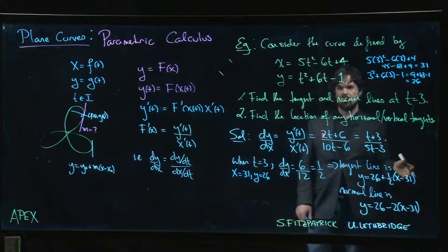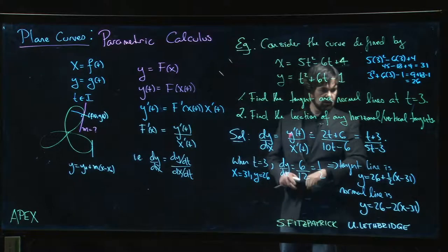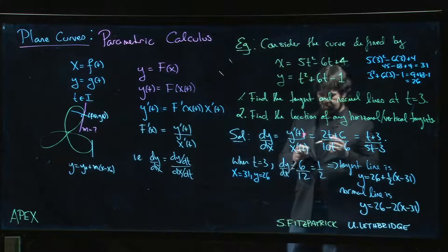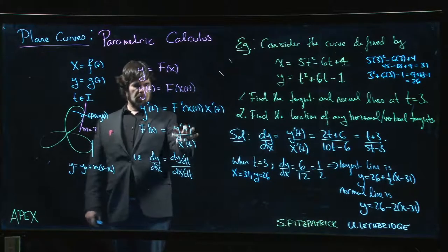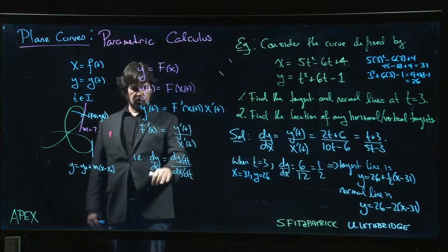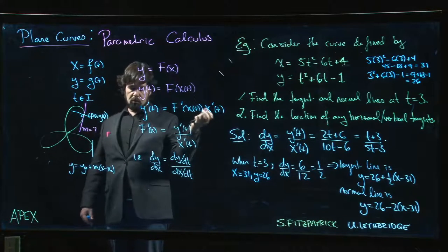Okay, so there's the tangent and normal lines. What about the location of horizontal or vertical tangents? Well remember, we discussed that horizontal tangents happen when dy/dx is equal to 0, which is when y prime is equal to 0.